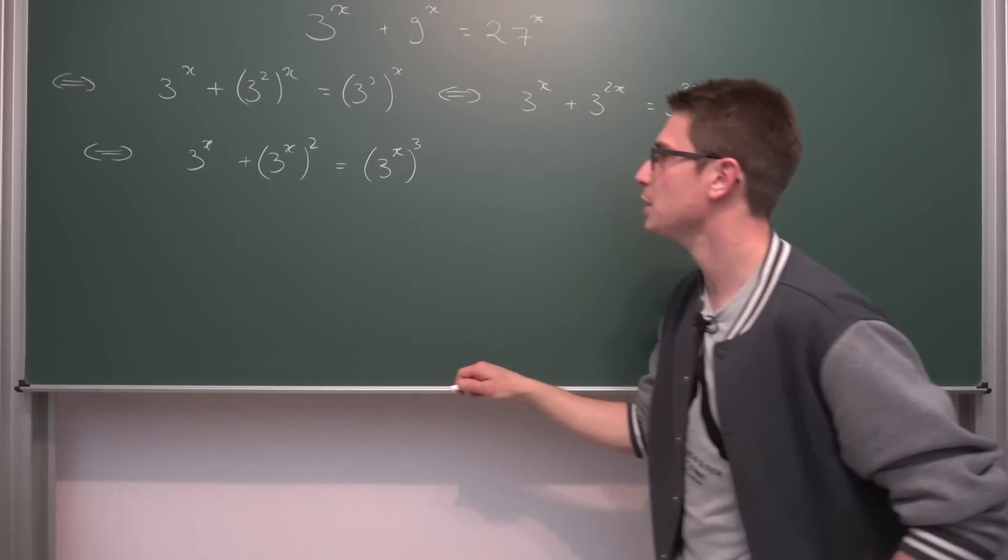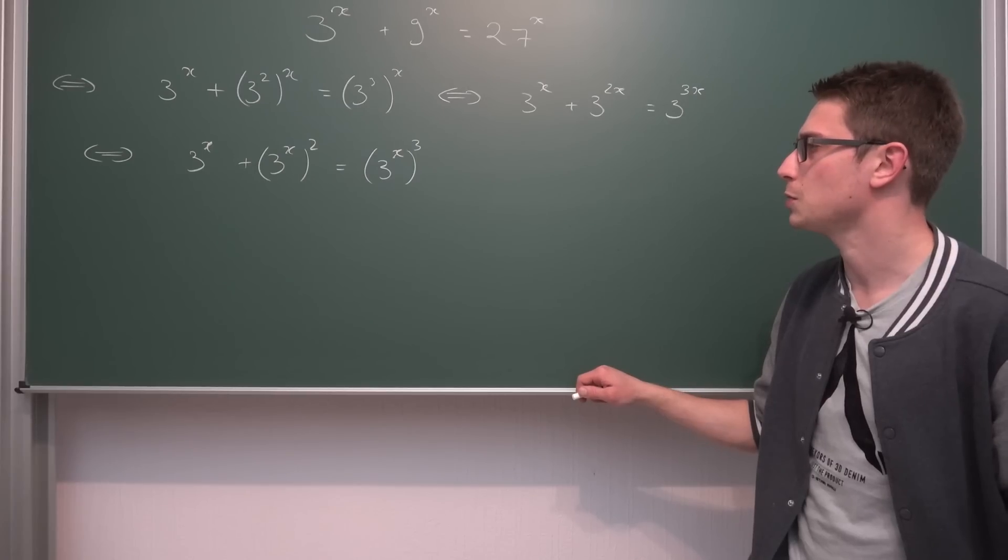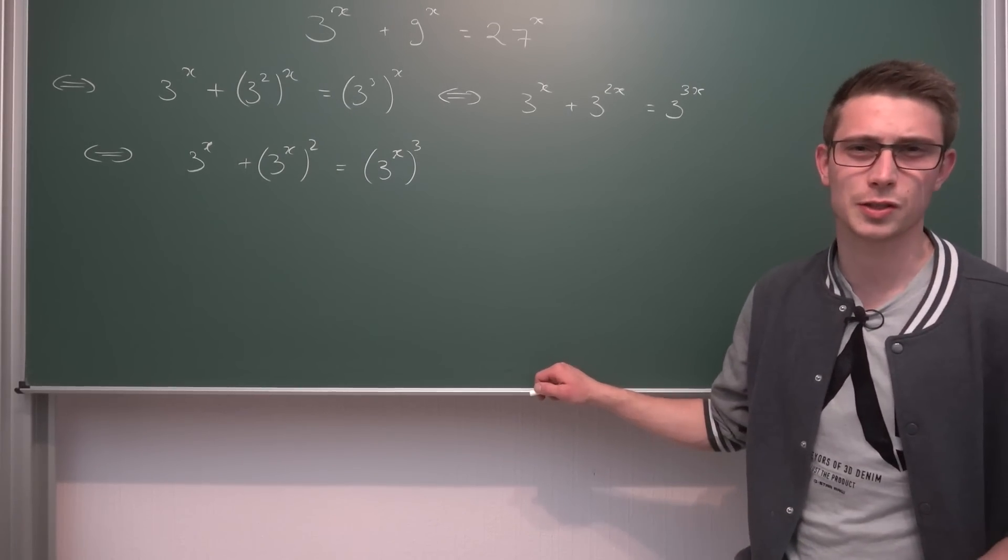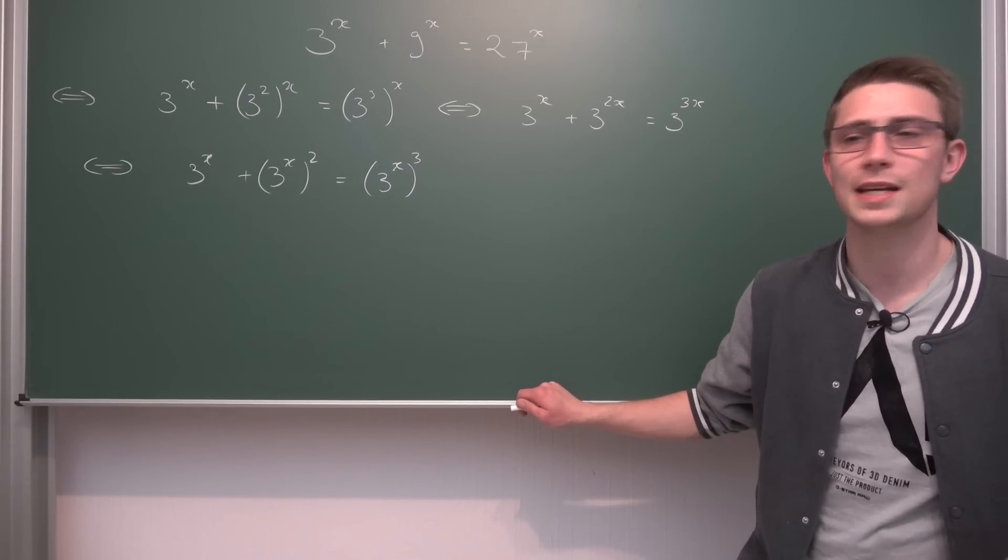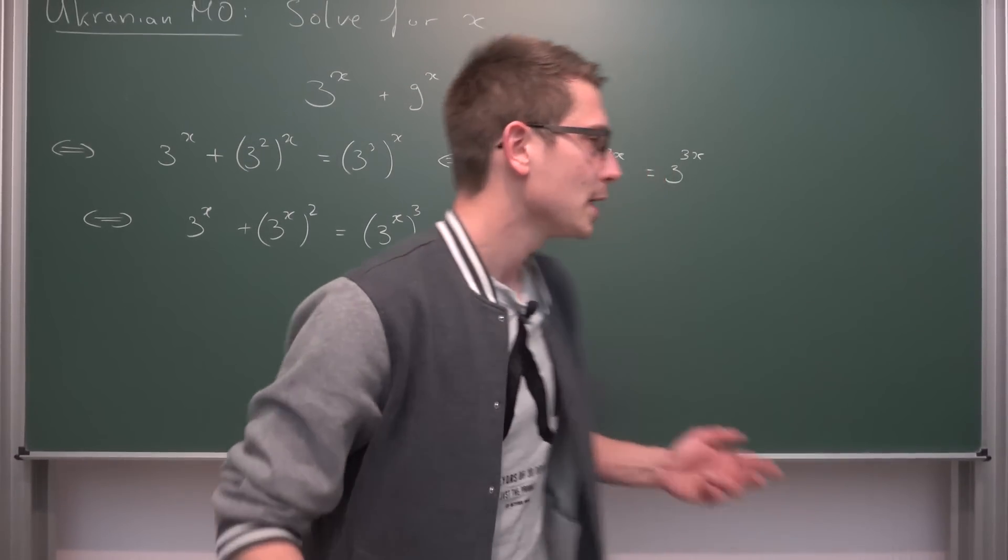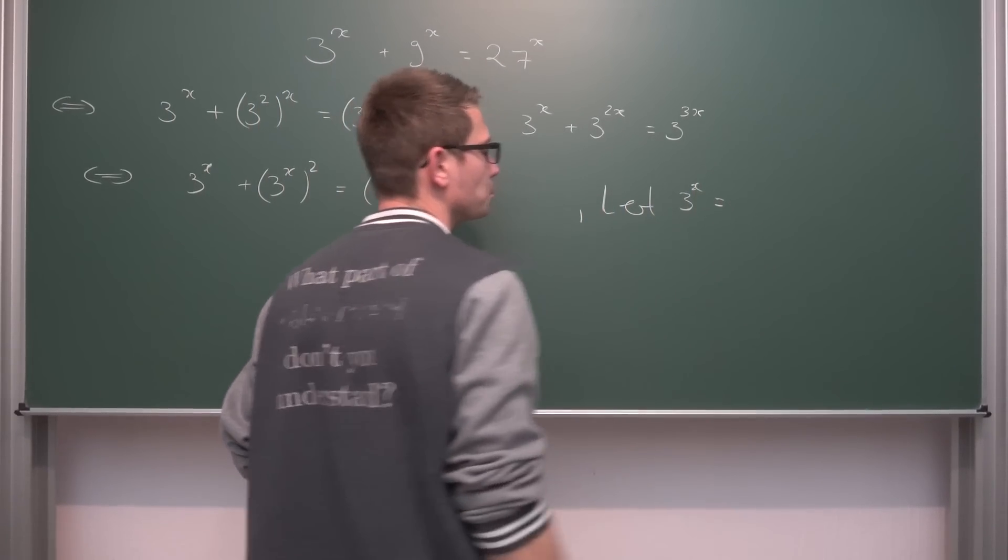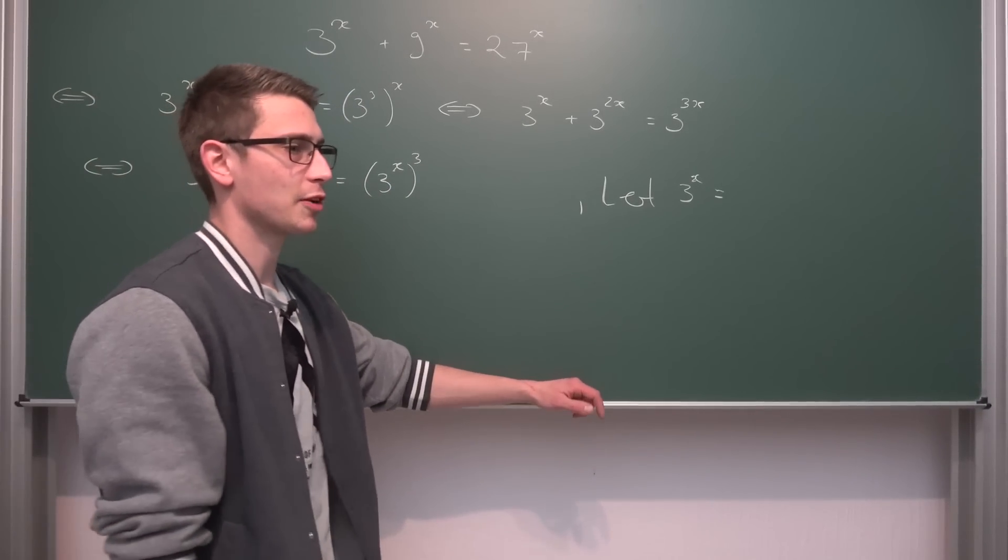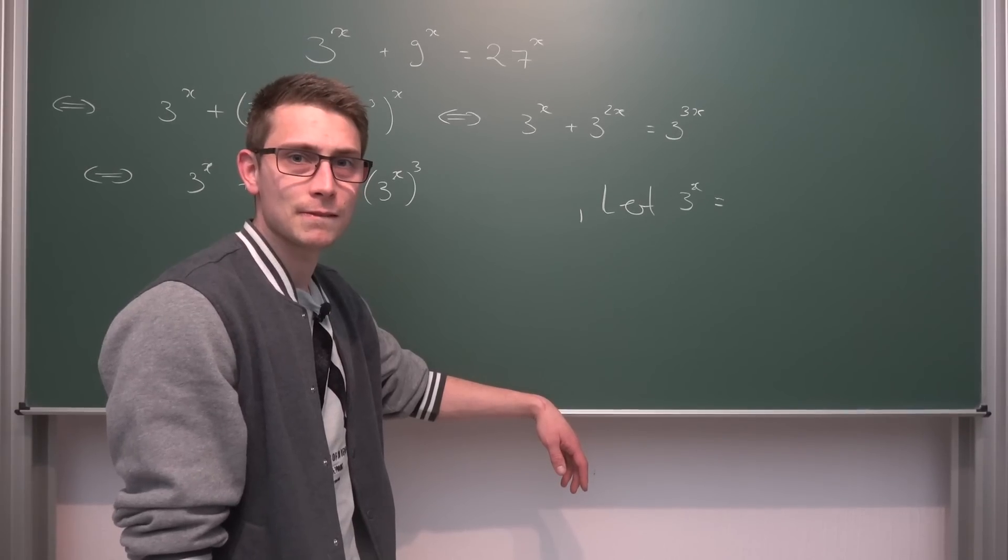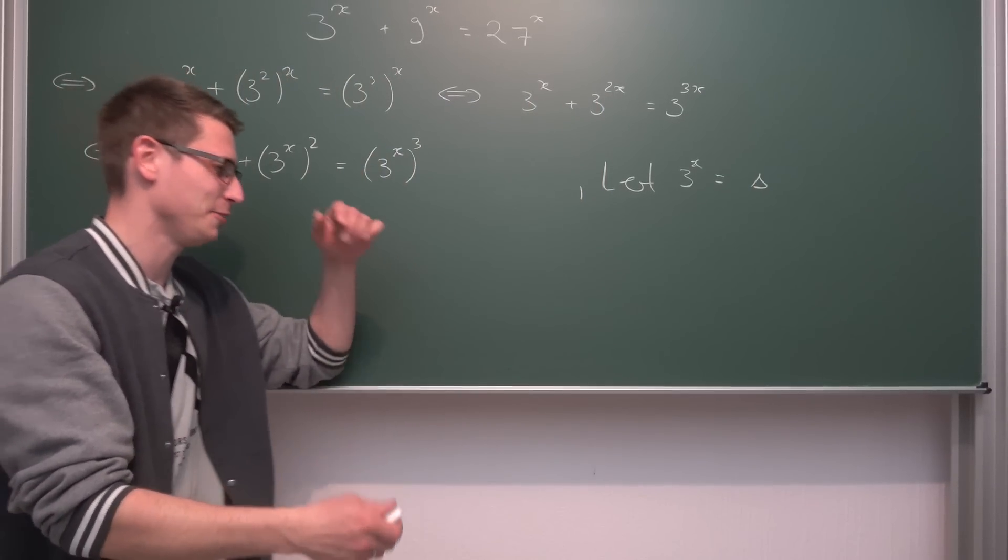Well, well, well, what do we have here? 3 to the x plus 3 to the x squared is equal to 3 to the x cubed. If I see this, I immediately try to introduce a substitution because 3 to the x looks rather ugly. It could be any other number. If x is out of the real numbers, it could be basically anything. So why not, let's say, let 3 to the x be equal to something fun. Think of something fun. Triangle.